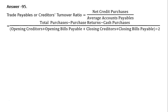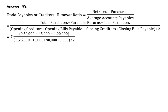That is total purchases minus purchase returns minus cash purchases, whole divided by opening creditors plus opening bills payable plus closing creditors plus closing bills payable, whole divided by 2. That is equal to rupees 9 lakh 50,000 minus rupees 45,000 minus rupees 1 lakh.